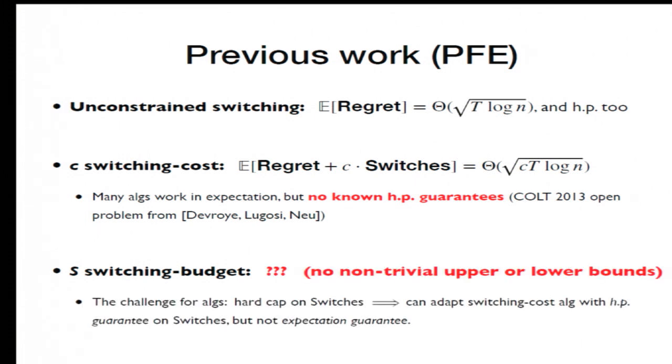In the switching budget setting, even less is known. There are no non-trivial upper bounds or lower bounds known. And just to kind of sketch the difficulty for upper bounds or for algorithms, the difficulty is really the hard cap on switches. You might try to adapt a good switching cost algorithm to switching budget setting. And this works if you have a high probability guarantee on the number of switches it makes. But if the only expectation guarantee, you have no way to control its tails and you can pay a lot.